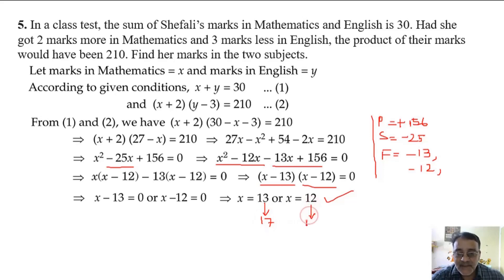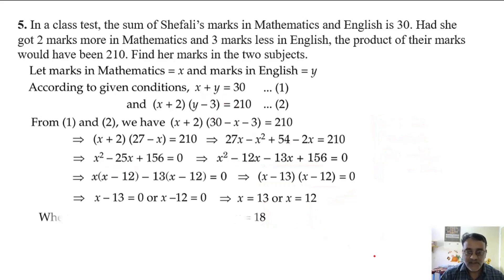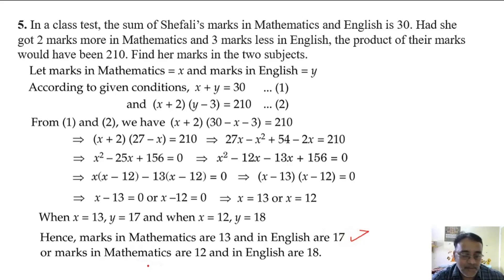When x equals 12, then y equals 18. And when x equals 13, then y equals 17. Hence, marks in mathematics are 13 and in English 17, or marks in mathematics are 12 and in English 18.